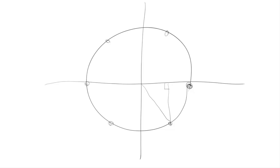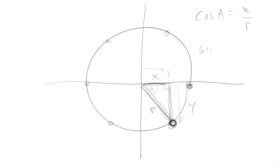The hypotenuse is actually the radius of the circle. The adjacent side is the position of the object on the x-axis, and the opposite side is the position on the y-axis. We know that cosine of the angle equals the adjacent side over the hypotenuse — that means x over the radius. And sine is the opposite over the hypotenuse, or y divided by radius. Multiplying both sides by r, we get x equals r·cosine(a) and y equals r·sine(a).